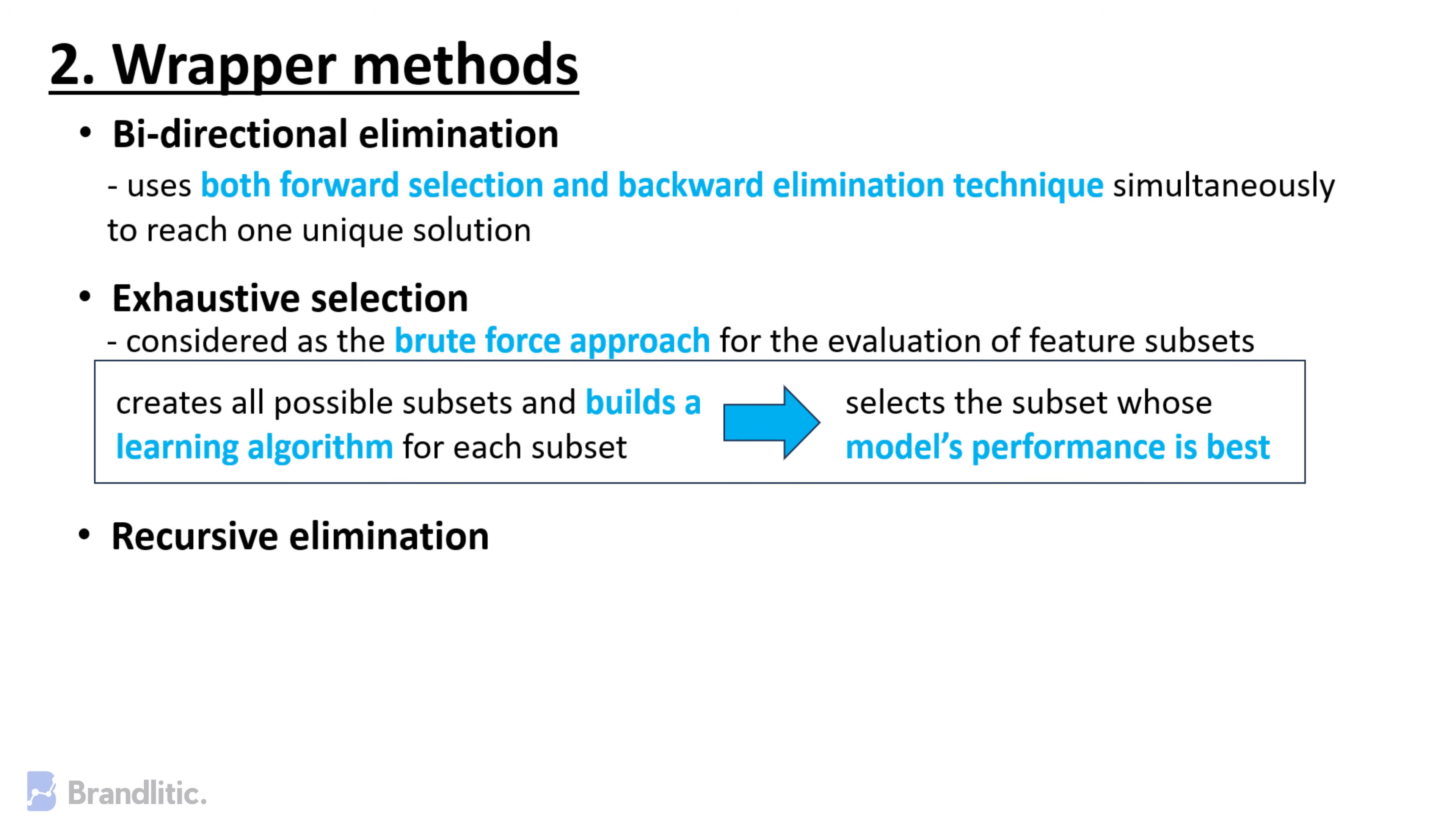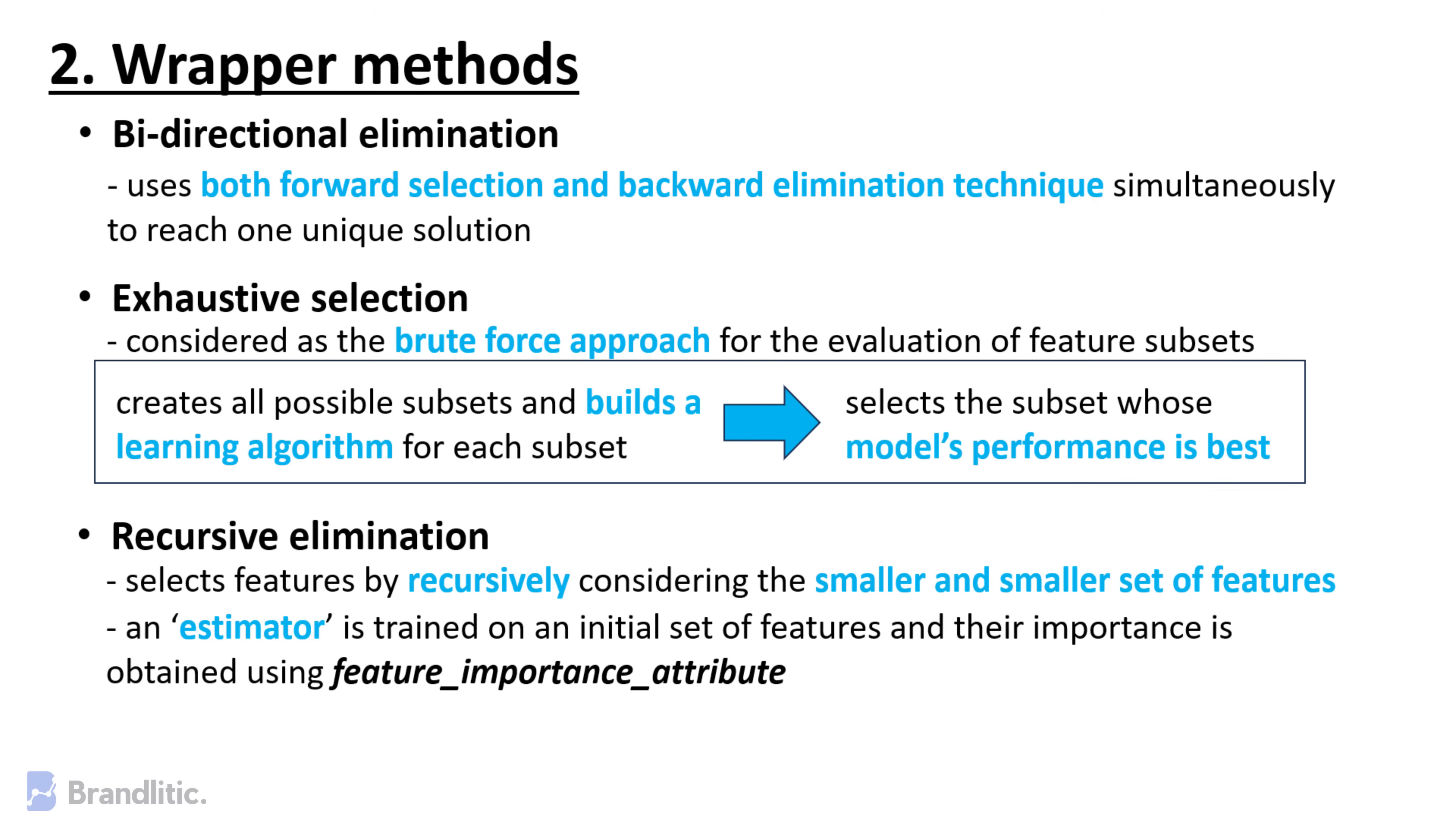Recursive Elimination. This greedy optimization method selects features by recursively considering the smaller and smaller set of features. An estimator is trained on an initial set of features and their importance is obtained through feature importance attribute. The least important features are then removed for the current set of features till we are left with the required number of features.